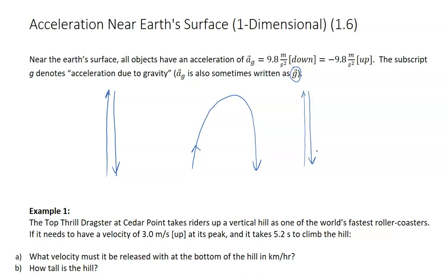So let's look at this example. The Top Thrill Dragster at Cedar Point takes riders up a vertical hill as one of the world's fastest roller coasters. If it needs to have a velocity of 3 meters per second up at its peak, otherwise it would get stuck if it's zero or if it was negative, it would make it over. And it takes 5.2 seconds to climb the hill. A, what velocity must it be released with at the bottom of the hill in kilometers per hour? Note here the change in units. And then, how tall is the hill? And we can answer that in meters.